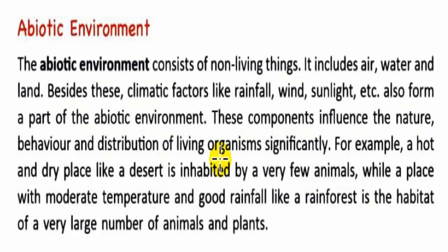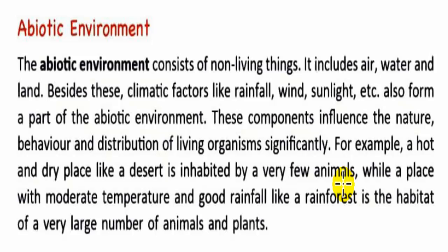For example, a hot and dry place like a desert is inhabited by very few animals, while a place with moderate temperature and good rainfall like a rainforest is the habitat of a very large number of animals and plants. So the nature, behavior, and distribution of living organisms depend greatly on the abiotic components.